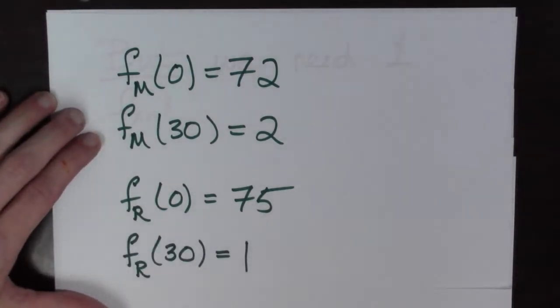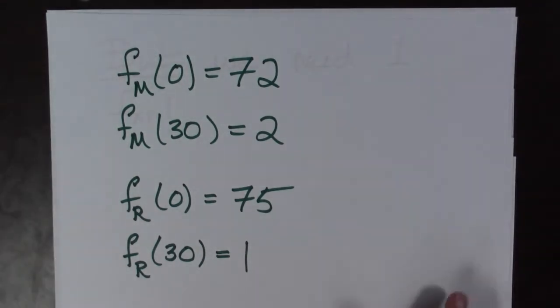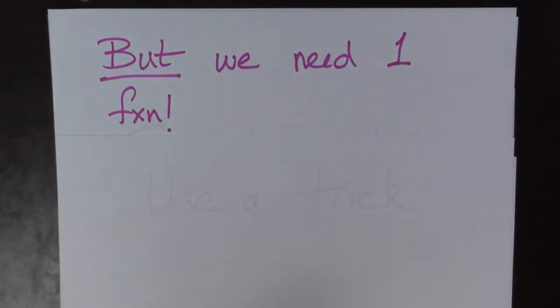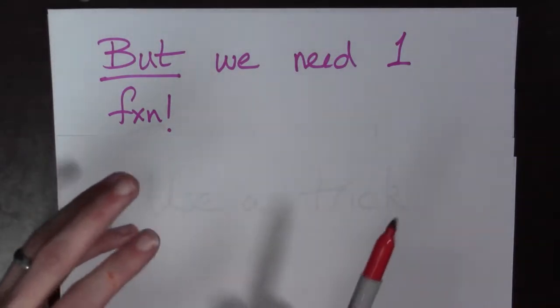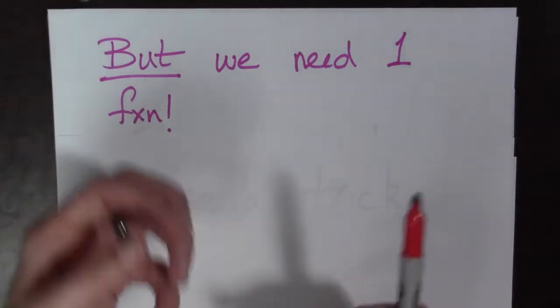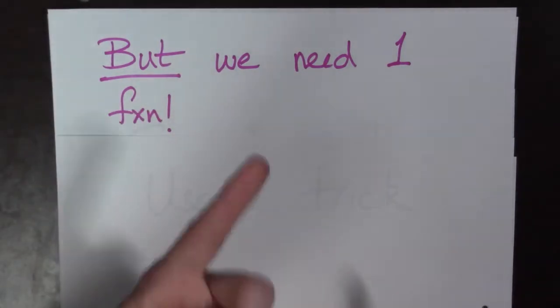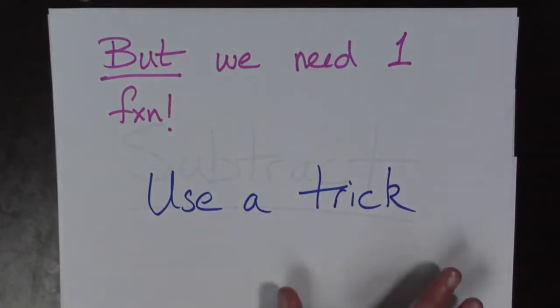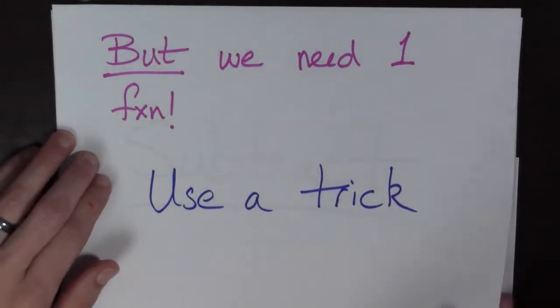But to use the Intermediate Value Theorem we need exactly one function, but we have two, and that's one too many. Well, here we're going to use a trick, and the trick is very simple - we're going to subtract.